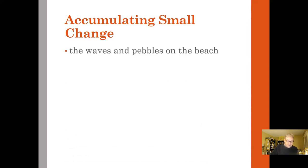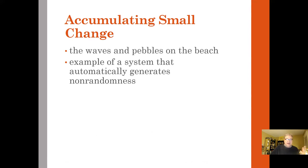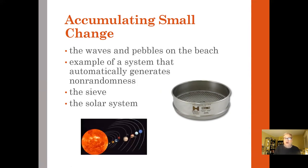So consider the waves and pebbles on a beach. This is an example of a system that automatically generates non-randomness. There's order in the way the pebbles and the rocks on a beach are ordered because of the way the waves wash in so that the smaller pebbles go further than the larger rocks. It acts as kind of a sieve. If you're familiar with a sieve, probably as a colander in a kitchen where the smaller things stay on top and the larger things go through. Another example of a very large sieve would be the solar system.